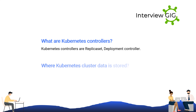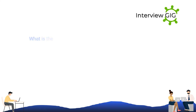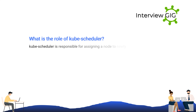Where is Kubernetes cluster data stored? etcd is responsible for storing Kubernetes cluster data. What is the role of the Kube scheduler? The Kube scheduler is responsible for assigning a node to newly created pods.